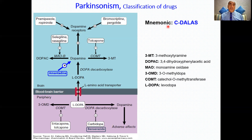The mnemonic for drugs used in Parkinsonism is C-DULLUS. C stands for COMT — catechol-O-methyltransferase — inhibitors. COMT can degrade both L-DOPA and dopamine, so COMT inhibitors such as entacapone or tolcapone form the first class of drugs. These preserve available dopamine by blocking its enzymatic breakdown.